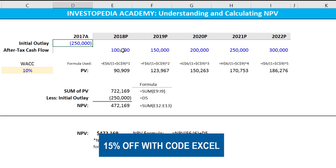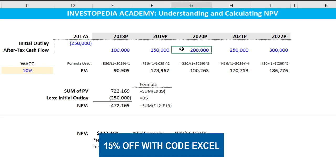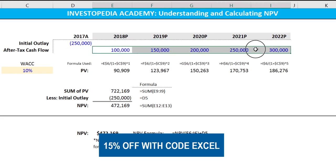We estimate what our after-tax cash flows are in year one, year two, and so on. The devil's in the details — if we have poor estimations of the after-tax cash flows, then that will affect our net present value. But that's a subject for a different day.